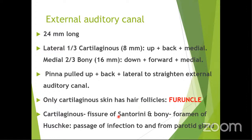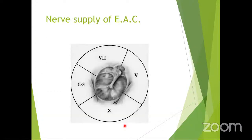There are two fissures connecting the EAC with surrounding structures: the fissure of Santorini, present in the cartilaginous part, and the foramen of Huschke, present in the bony part. These fissures or foramina allow infection to spread from the external auditory canal to the parotid or skull base, and vice versa.